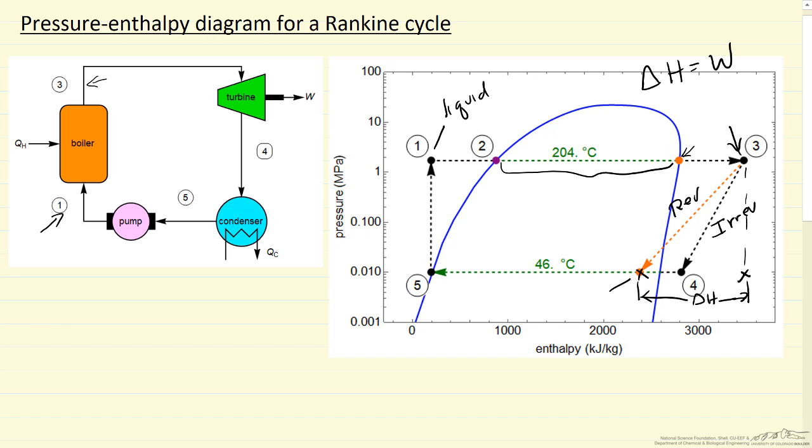In this case, we have leaving the turbine a vapor-liquid mixture. That vapor-liquid mixture, mostly vapor, is then condensed, so this is the condenser, and it's condensed to a liquid. So here we have a liquid, but remember it's low-pressure liquid, saturation conditions.